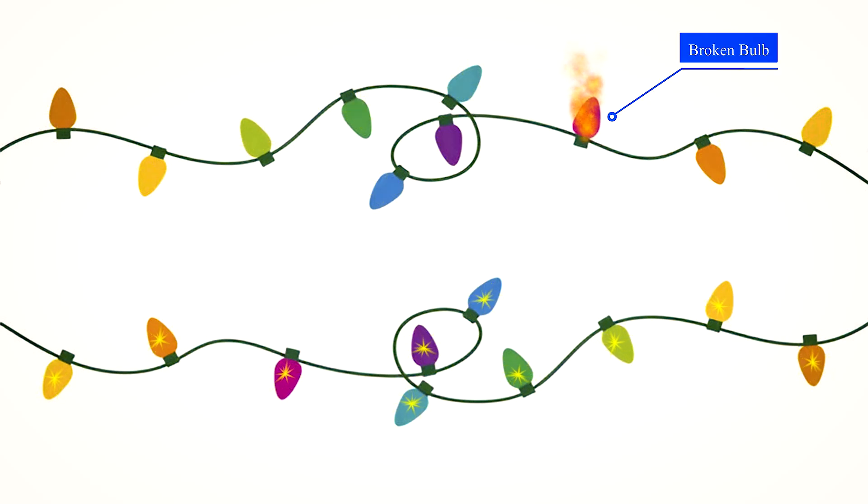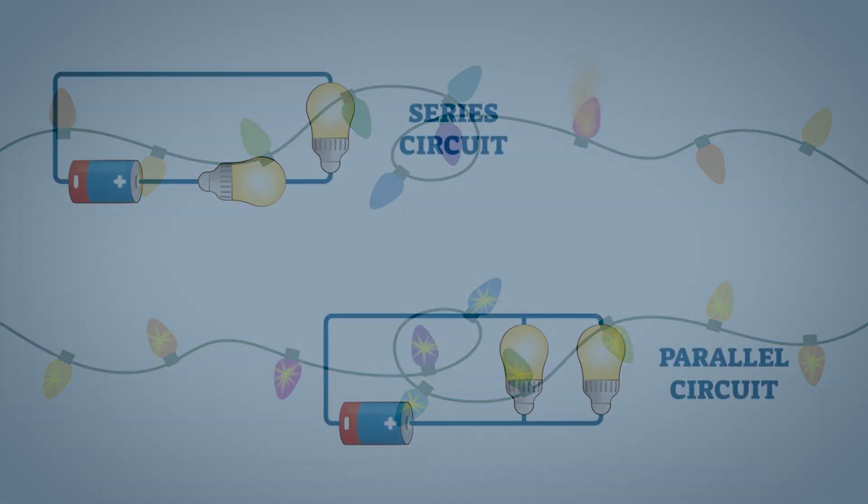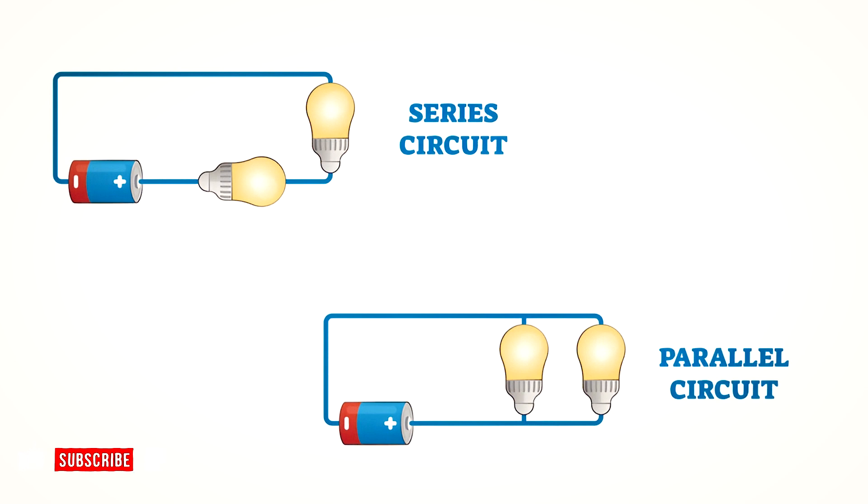Ever wondered why one broken bulb turns off a whole string of lights, but others keep glowing? It all comes down to how a circuit is wired. Let's break down the difference between series and parallel circuits, with simple visuals.